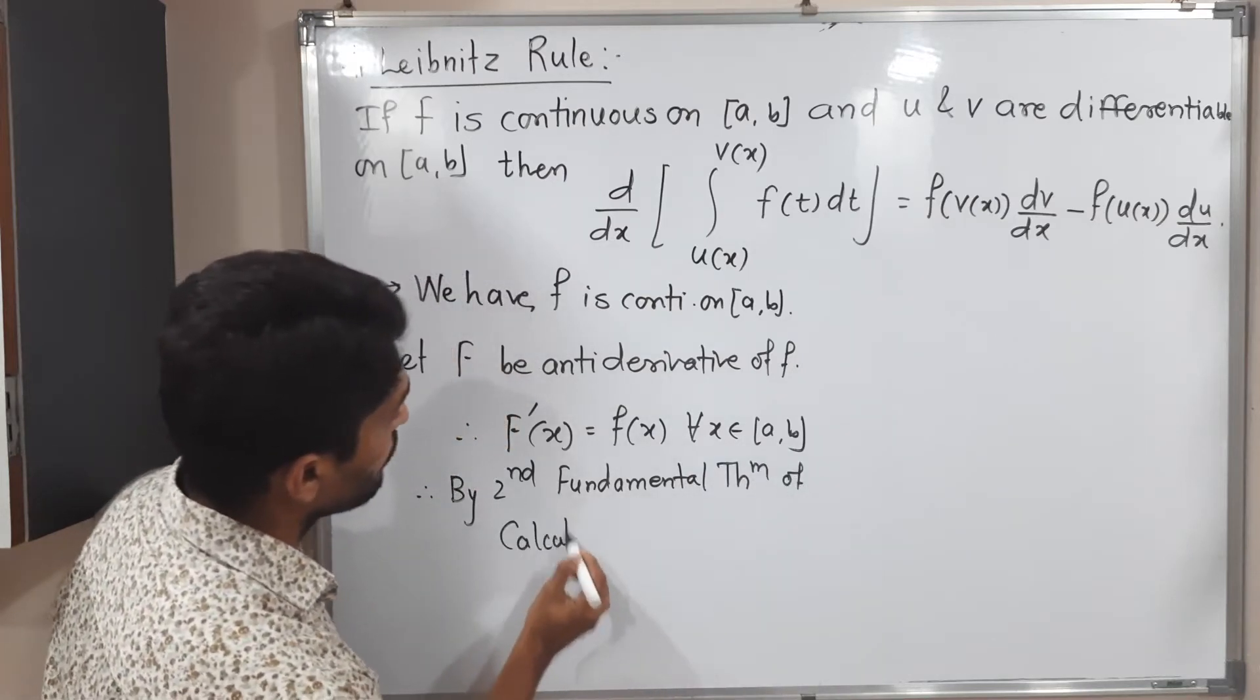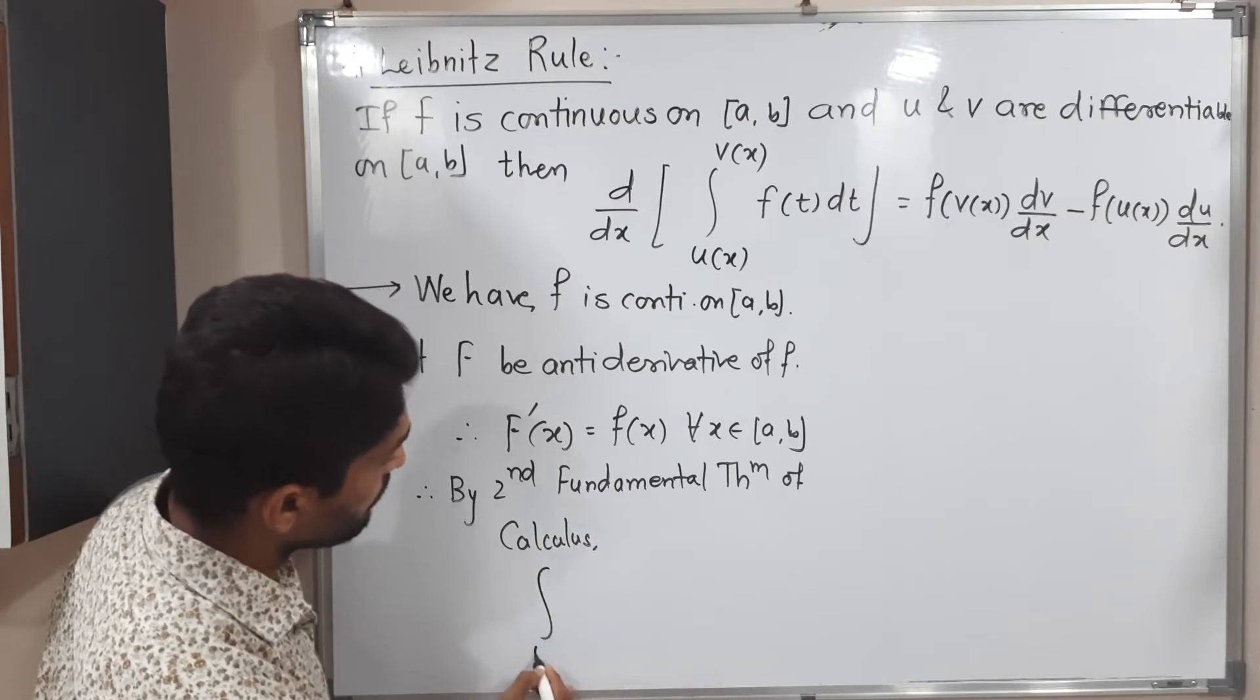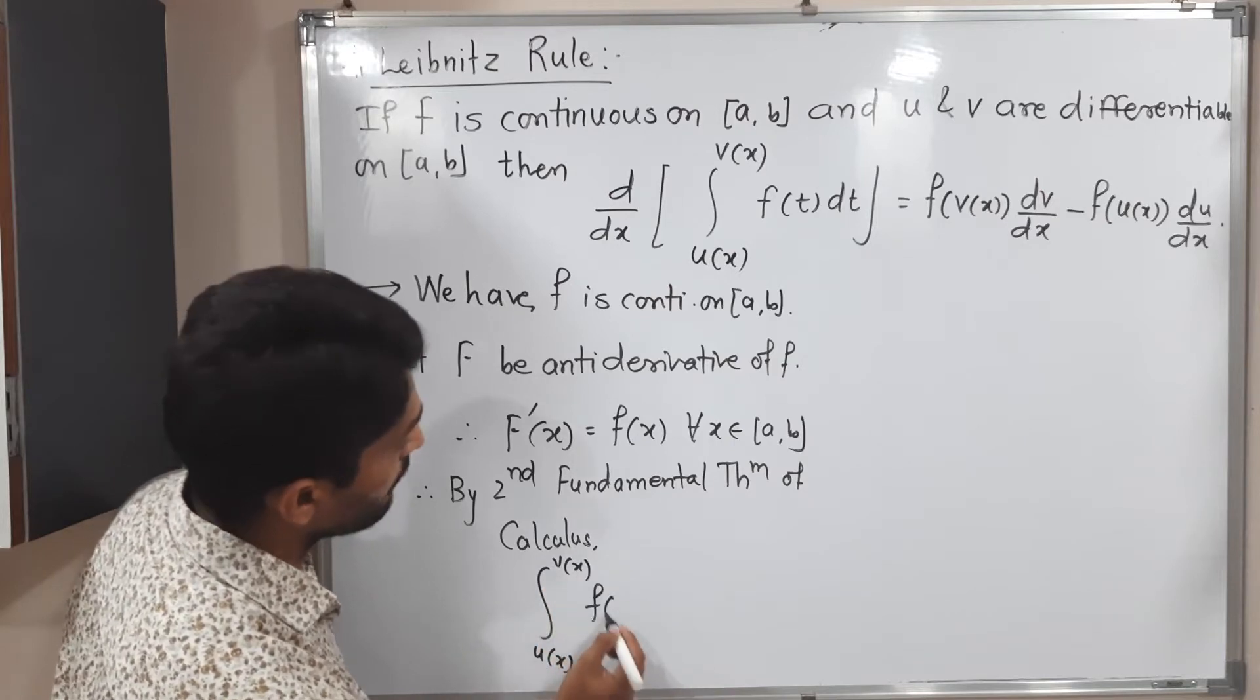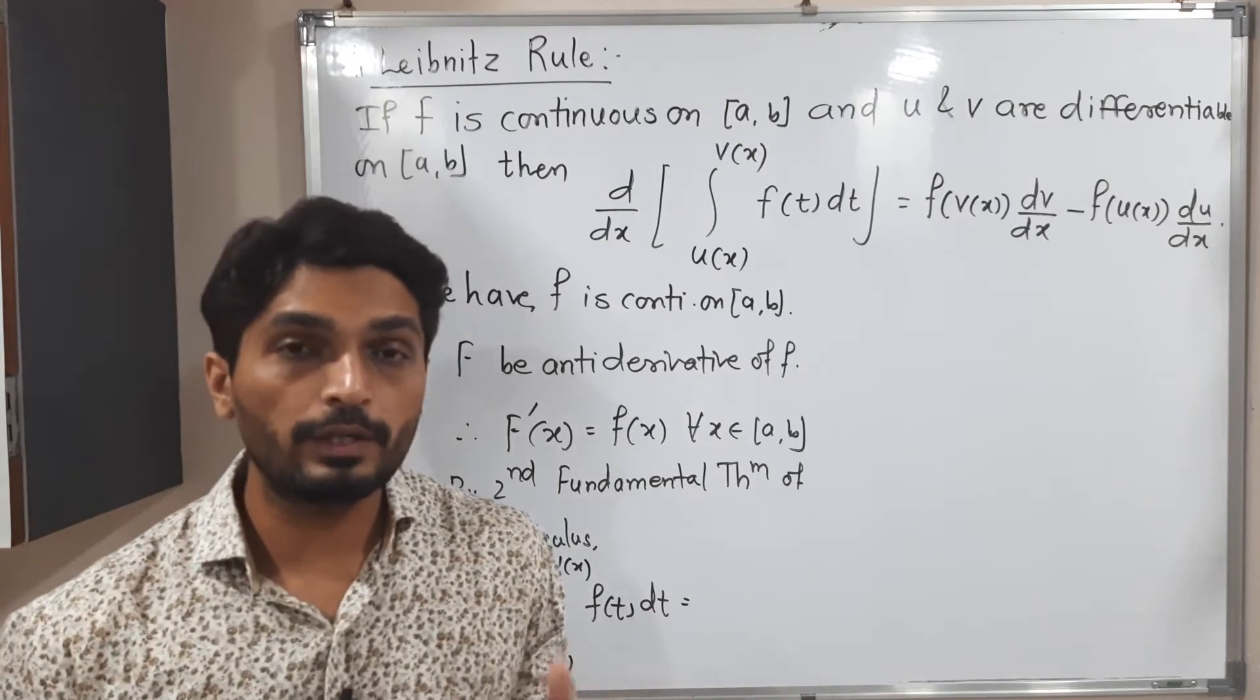I hope all of you still remember the result that integration u of x to v of x f of t dt is equal to, see integration of small f is capital F. So what we do? First we put upper limit minus we put lower limit.